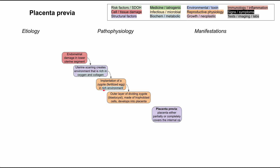When that zygote implants, it's predisposed to implant in an area next to or around the scar. The scar, which has high oxygen and collagen, attracts the implantation of the zygote. Once that zygote implants, it starts dividing, becomes a blastocyst, and the trophoblastic cells around the blastocyst develop into the placenta. So this placenta is predisposed to being next to the uterine scar — where the endometrial damage originally occurred — and when that placenta forms near the internal os of the uterus, you have placenta previa.